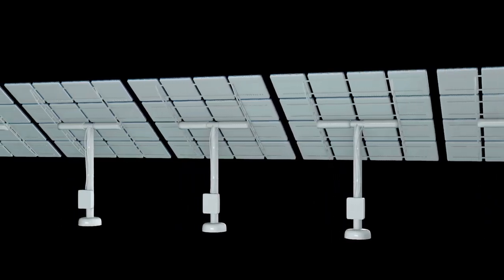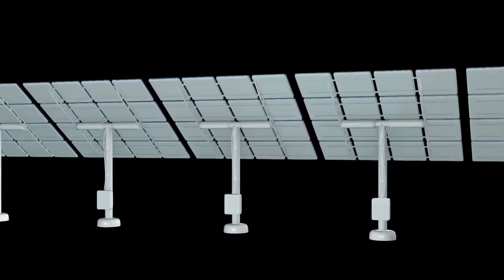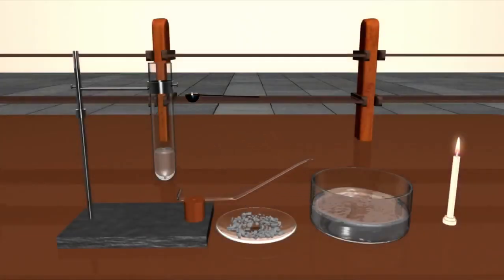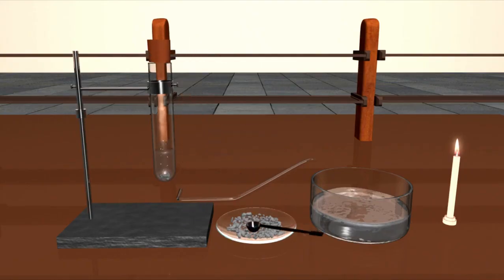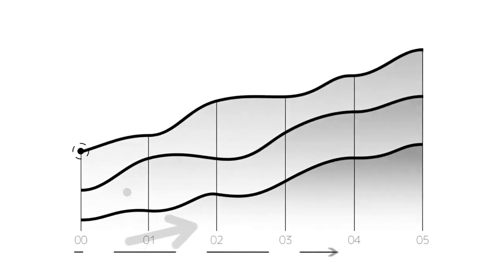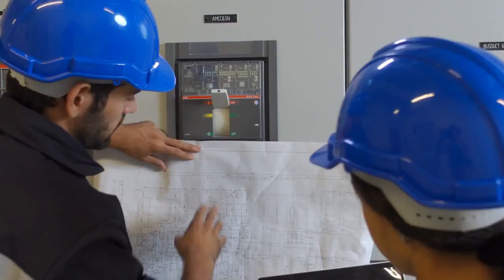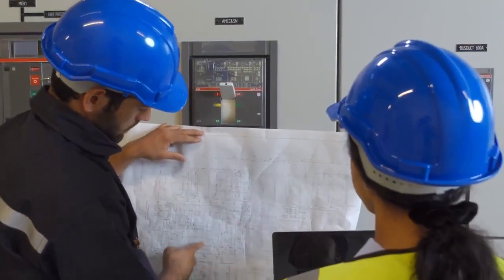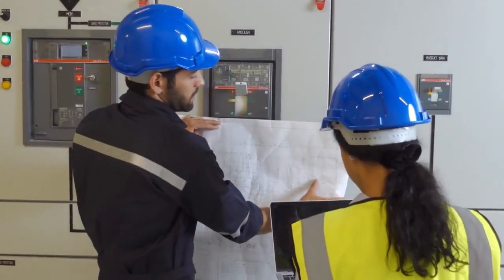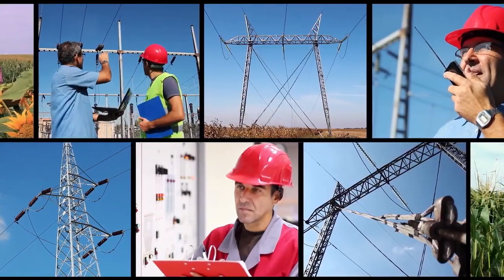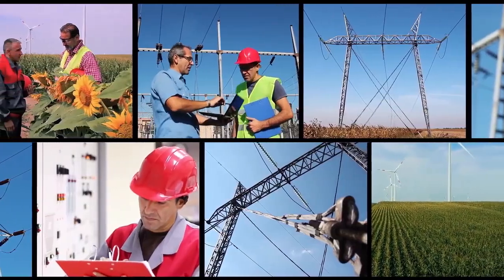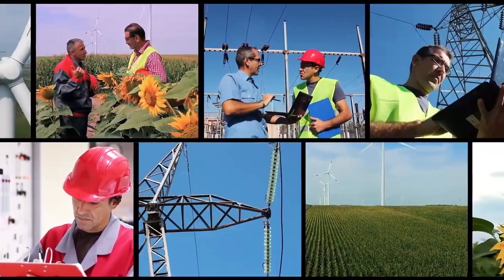As Voyager 1 continues its journey into the vast expanse of interstellar space, it moves farther from the sun, encountering a dramatic reduction in available solar energy. Unlike spacecraft operating within the inner solar system, Voyager 1 depends on its radioisotope thermoelectric generators, RTGs, to sustain its operations. These RTGs convert heat produced by radioactive decay of plutonium-238 into electricity. However, as the years pass, the power output from the RTGs gradually declines.